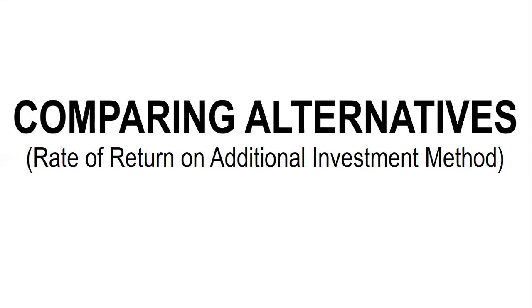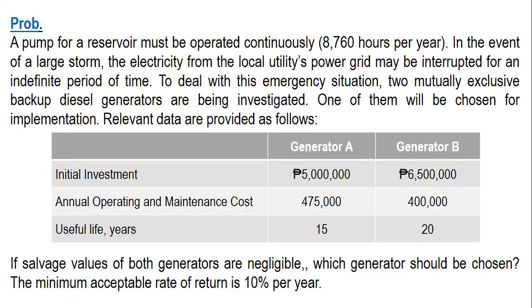In this video I am going to solve a sample problem on comparing alternatives and I'm going to use the rate of return on additional investment method. A pump must be operated continuously, that is 8760 hours per year — 24 hours per day times 365 days. In the event of a large storm, electricity from the local utility's power grid may be interrupted for an indefinite period. To deal with this emergency, two mutually exclusive backup diesel generators are being investigated.